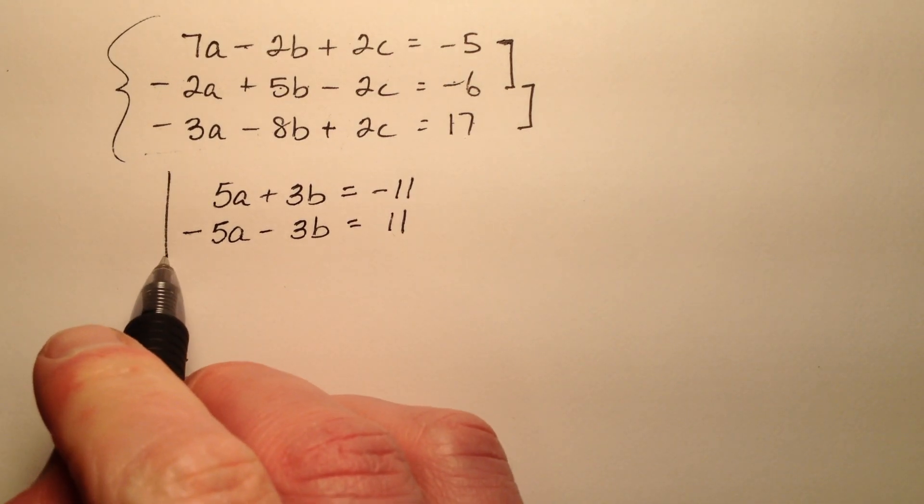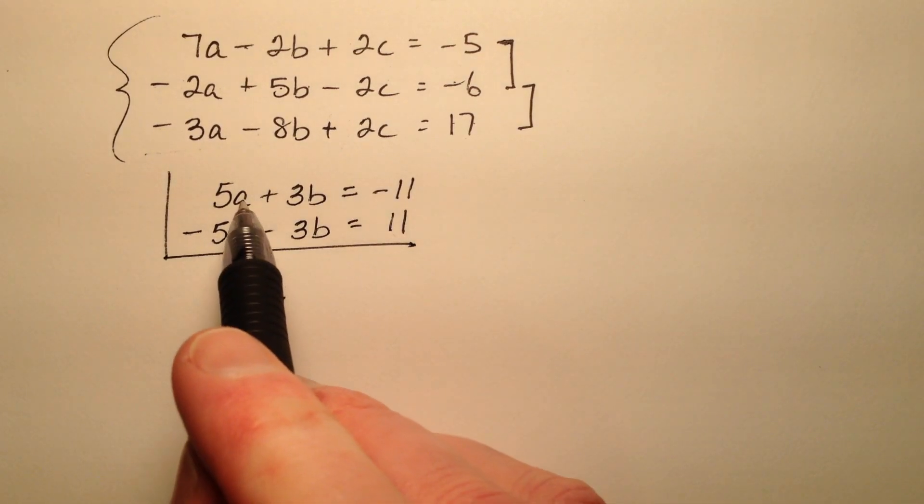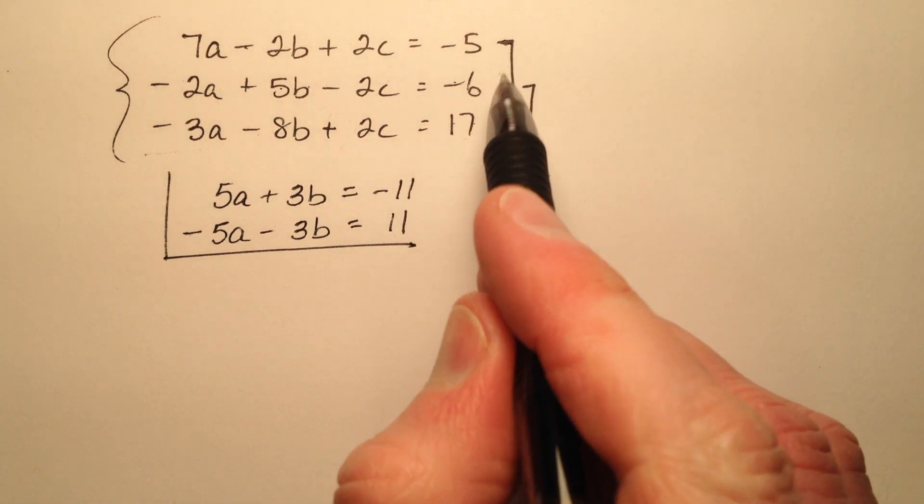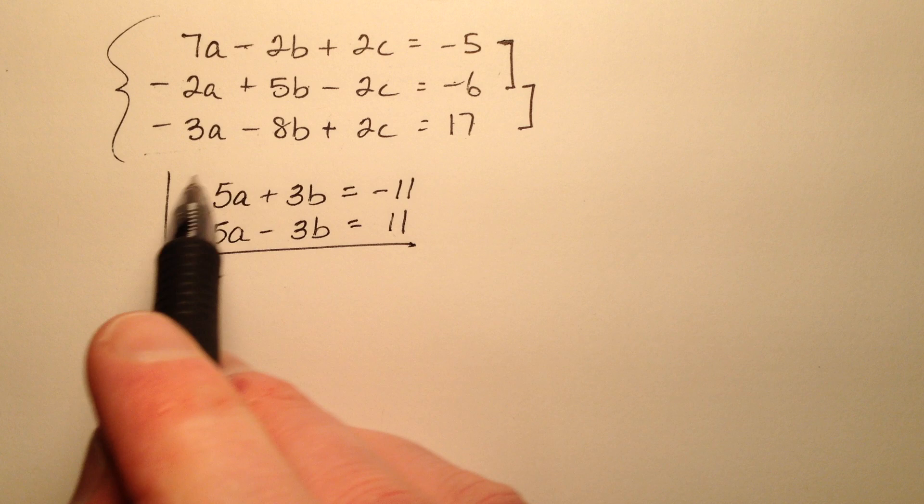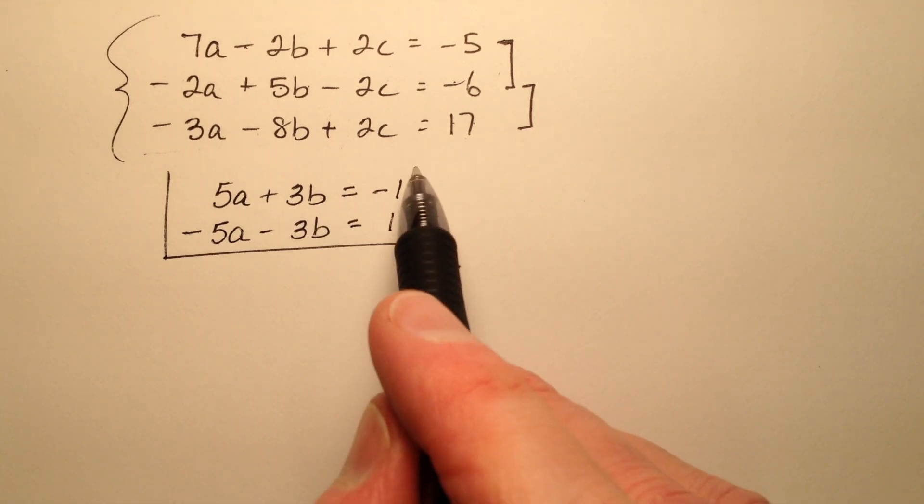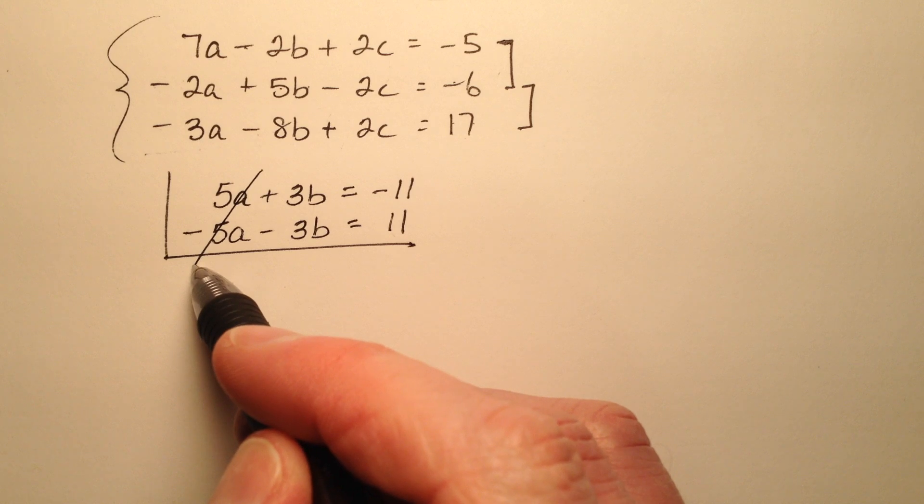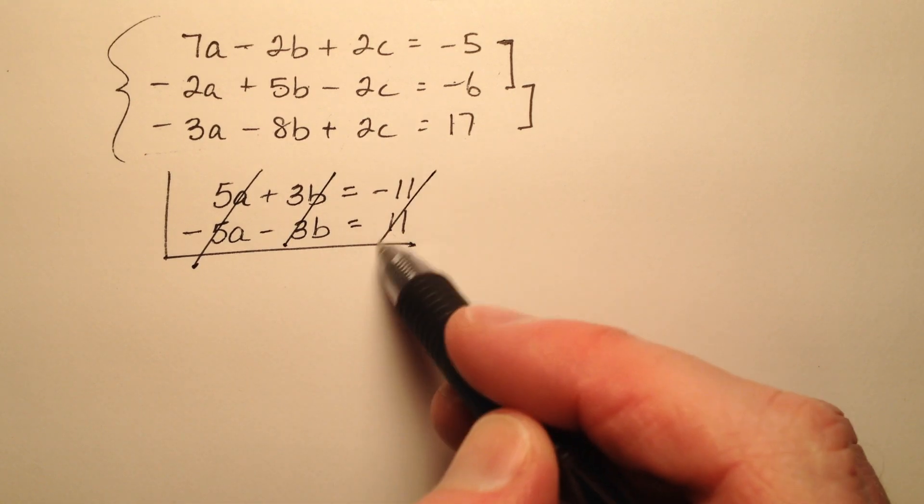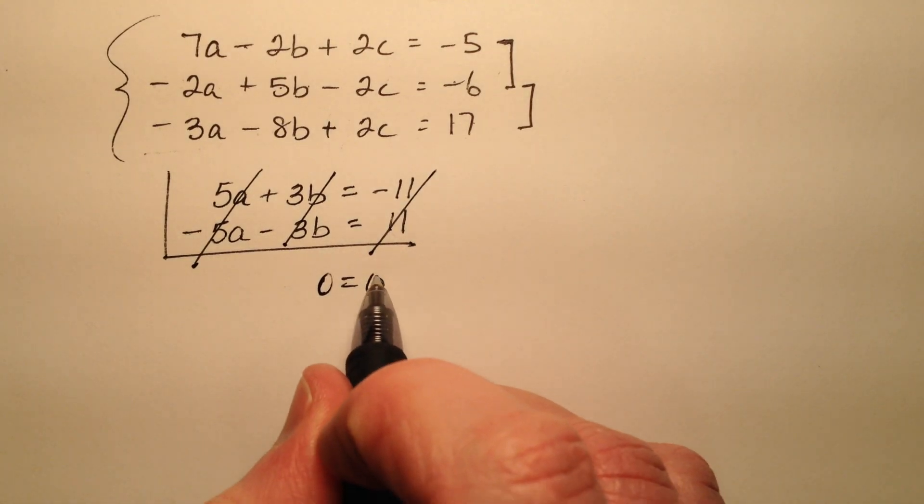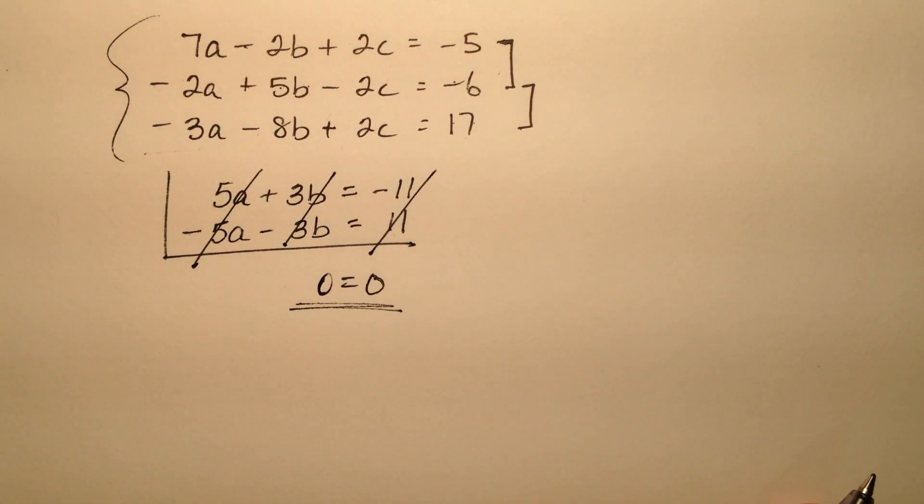Well something interesting has happened here. It looks like when I put these equations together, the first two and the last two, it created equations that looked a lot alike. So when I add these two equations, my a's will cancel, my b's will cancel, and my constants will cancel. So I'm left with the true statement 0 equals 0.